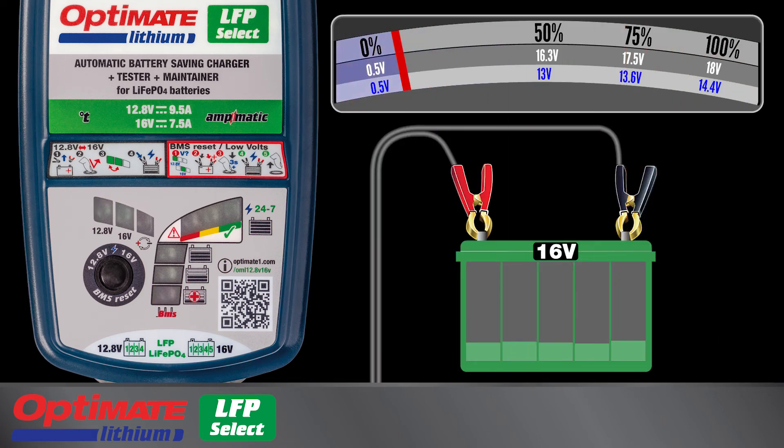Lamp 1B indicating 16 volts blinks and no charge is delivered if a battery with voltage of less than 15 volts is connected. This low voltage protection prevents accidental charging of a 12.8 volt battery. If the connected battery is rated at 16 volts, press and hold the button until charging proceeds.